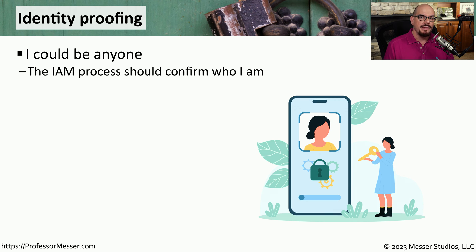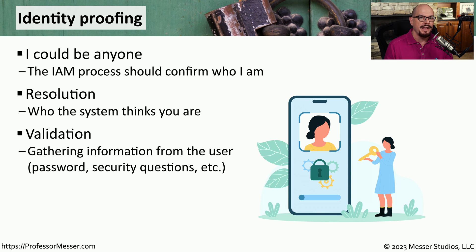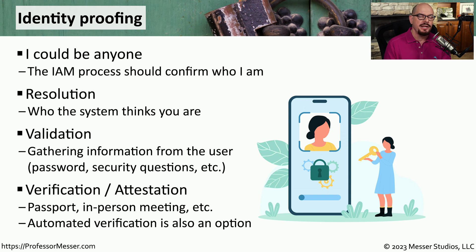Another big part of IAM is verifying who a user might be. We refer to this as identity proofing. There should be a formal process, especially during the creation of an account, to verify that a user really is who they say they are. This process is referred to as resolution, and it's an important step to ensure we're not assigning rights and permissions to someone who should not be on this network. It's also important that we're able to obtain additional validation — the user needs to provide something only they know, such as a password, and perhaps answers to security questions. All of this needs to be verified through a process called attestation, where we need additional details to really verify that person's identity. Many times, this is done through government documents like a passport or driver's license.